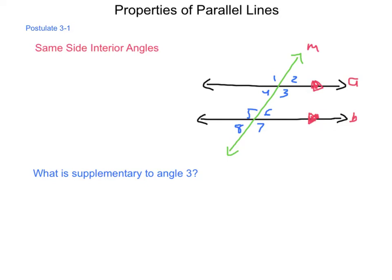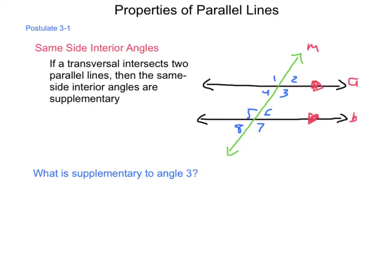Continuing where we left off from section 3.1, here in 3.2 we're going to be looking at the properties of parallel lines and using much of the same vocabulary as we had before. We're going to begin with Postulate 3.1, which is same side interior angles. This postulate states that if a transversal intersects two parallel lines, then the same side interior angles are supplementary — meaning angles 3 and 6 will add up to 180 degrees, as will angles 4 and 5.